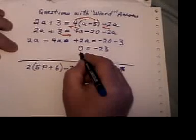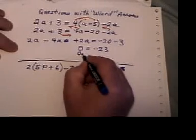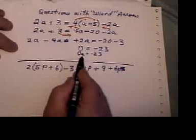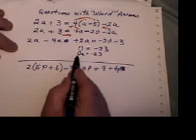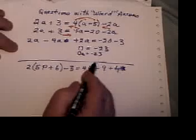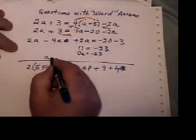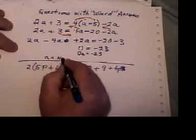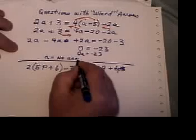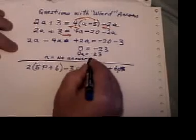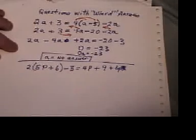In fact, what we really have here is zero times A equals negative 23. And I know that no matter what number I put in for A, if I multiply it by zero, I'll never get negative 23. So in this case, we have A equals no answer. There is no answer to the question.